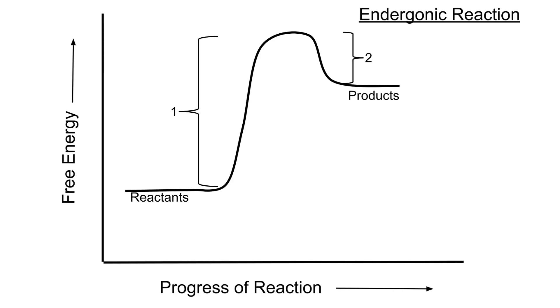The opposite is true for an endergonic reaction. So imagine a ball being pushed up the slide. We start with low potential energy at the beginning. We then add energy to the system by pushing it up the slide. And then at the top of the slide, it has more potential energy than at the beginning.